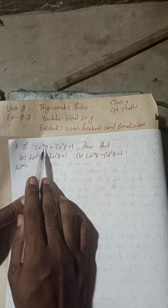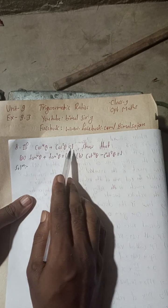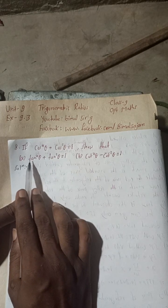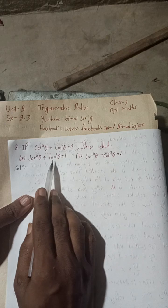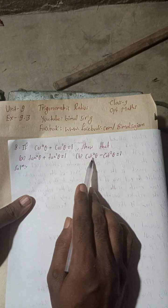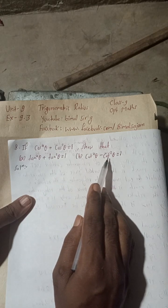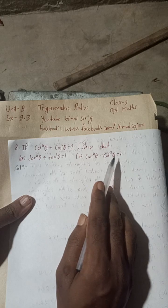This is question 8. Given: cos⁴θ + cos²θ = 1. Part (a): prove that tan⁴θ + tan²θ = 1. Part (b): prove that cot⁴θ - cot²θ = 1. Both questions I am going to solve in this single video.